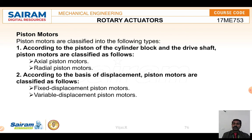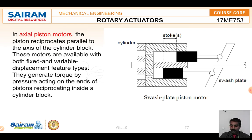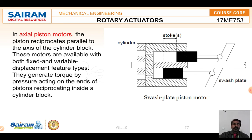There are also piston motors. The piston motor is classified according to the piston, cylinder block, and drive shaft into two types: axial piston and radial piston. For the axial piston motor, the piston reciprocates parallel to the axis of the cylinder. The cylinder is horizontal and the pistons move parallel to the cylinder axis. A swash plate on the right side is connected to the piston with a connecting rod or plunger.